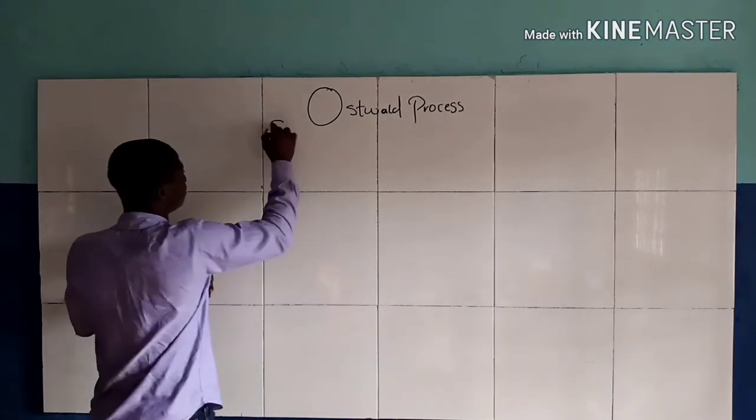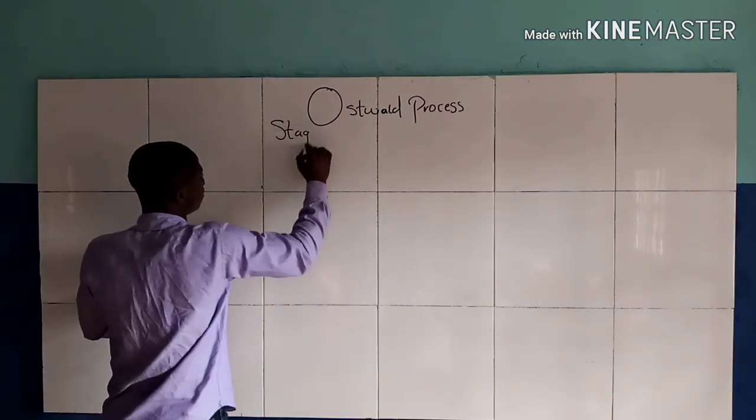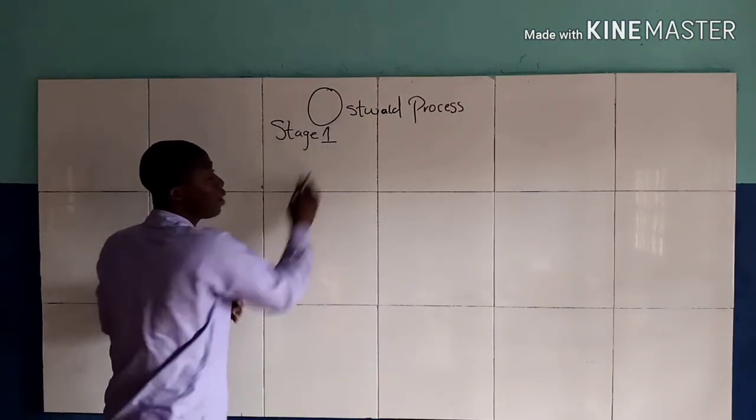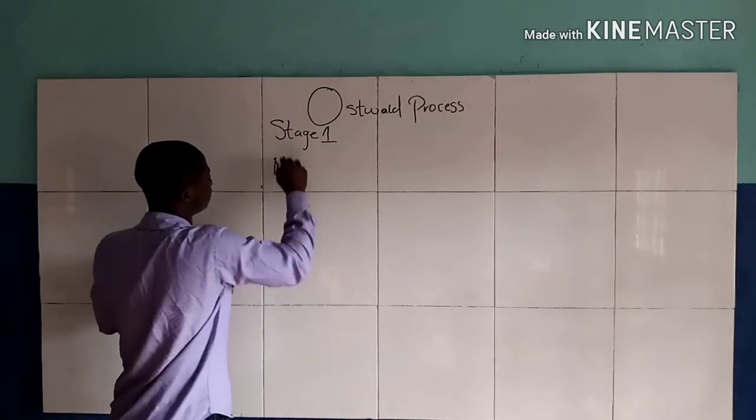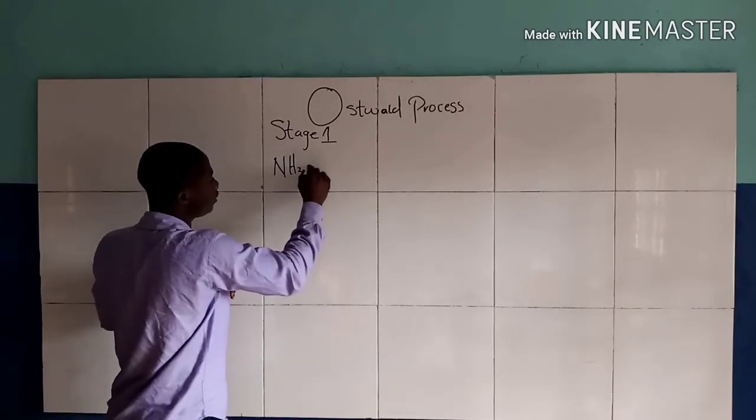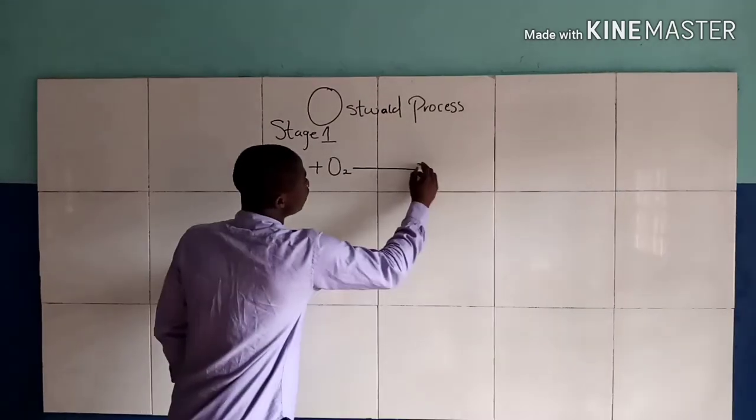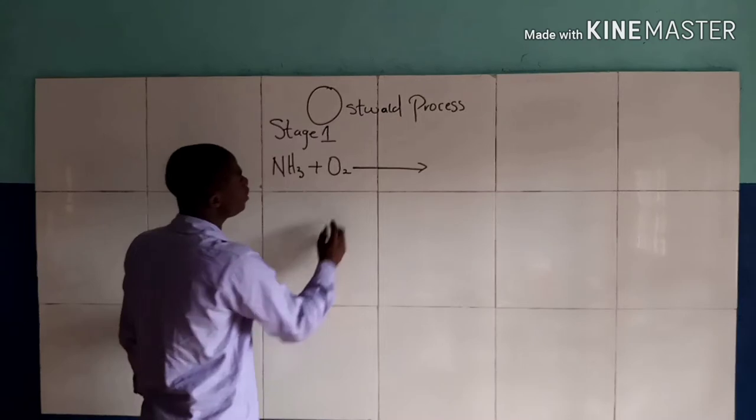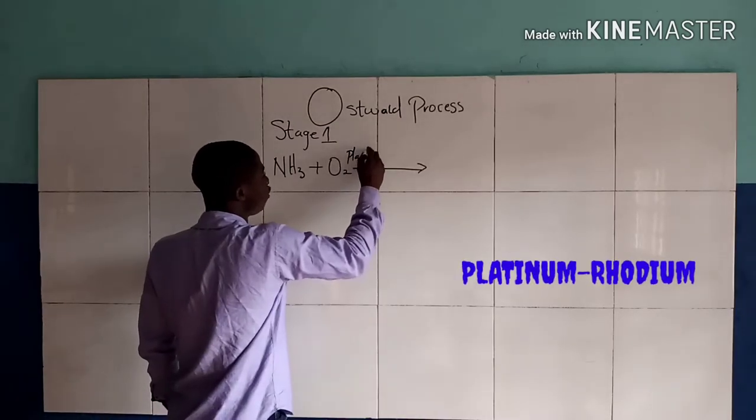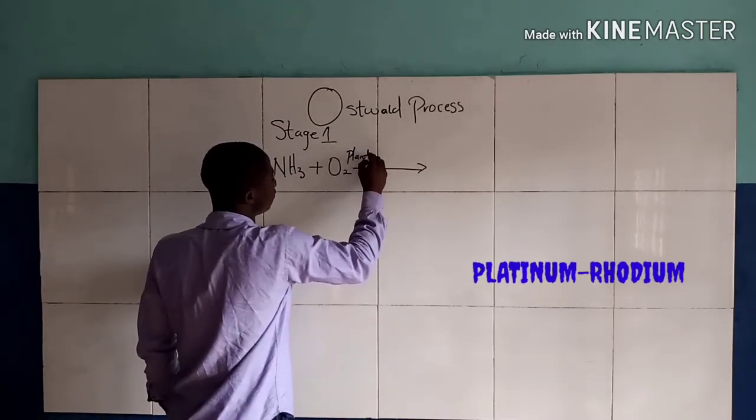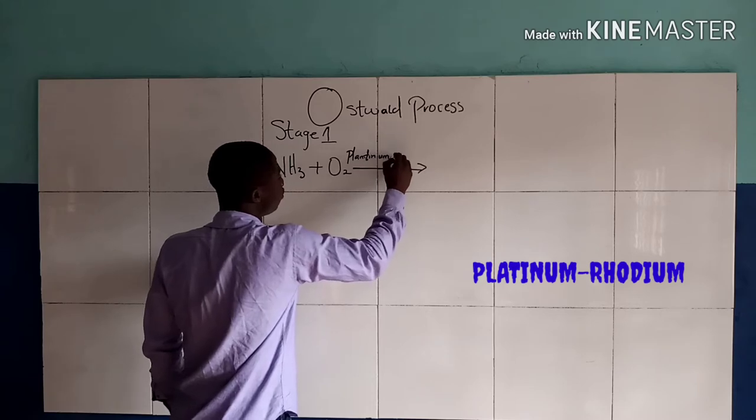Here is the first stage. When ammonia, NH3, reacts with a molecule of oxygen, it requires a catalyst which is called platinum rhodium.